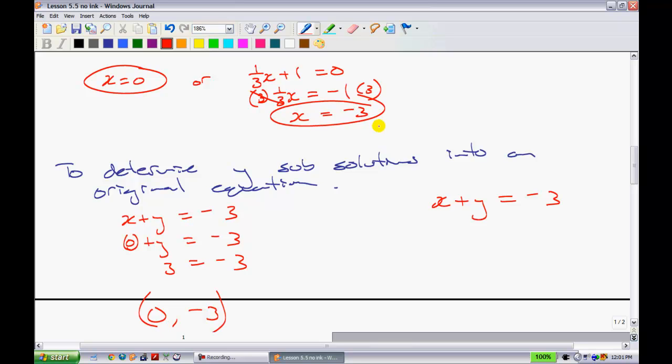The other one, we are going to substitute in negative 3 for x. We have negative 3 plus y equals negative 3. When I add 3 to both sides, you get y equals 0. My other ordered pair would be at (negative 3, 0). This is a scenario where you would have a quadratic and a line crossing it in two points, because we got two final solutions.